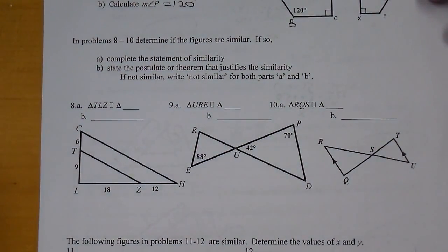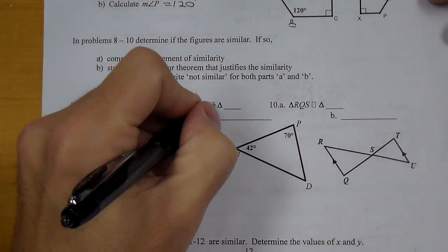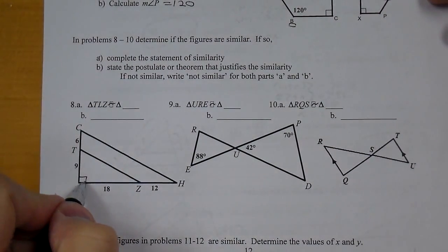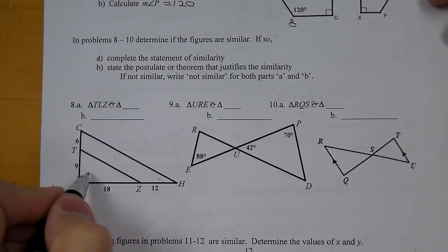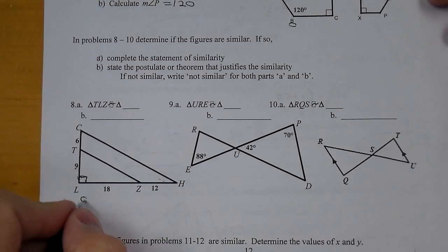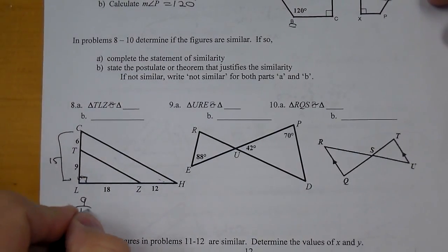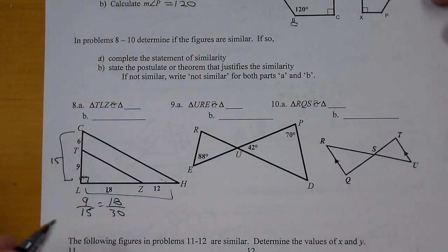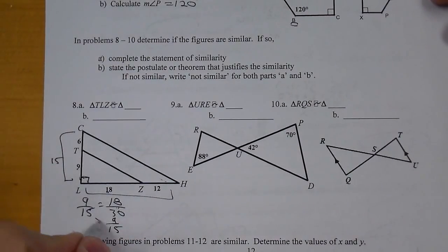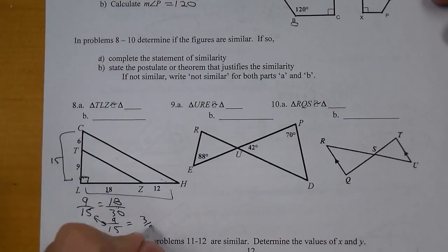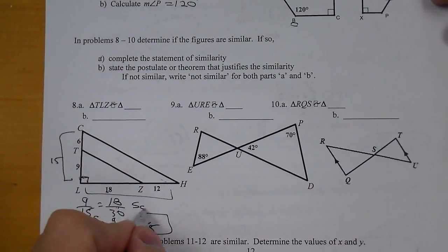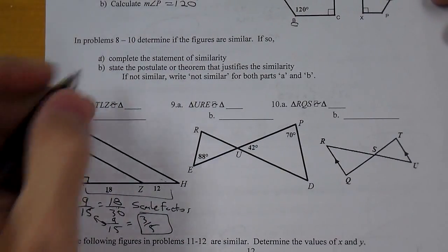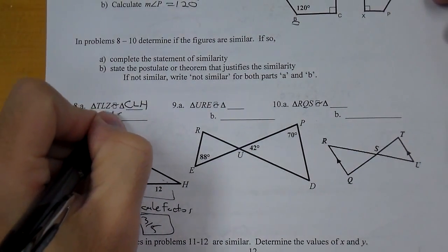For 8 through 10, we're going to complete the similarity statement, and then say how they are similar. So in the first one, I have this angle L they both have. That's the big angle and the small angle. And then if I look at sides, I could do 9 over 15, which is the whole side, is equal to 18, small piece, over 30. And I need to make sure those are equal to each other. Well, this one reduces to be 9 over 15, and I can see they match there. If we went a little bit further, we can make it 3 over 5. 3 over 5 is important because it is the scale factor. So they are similar. So we'd say TLZ is similar to CLH. And they are similar by side, angle, side.